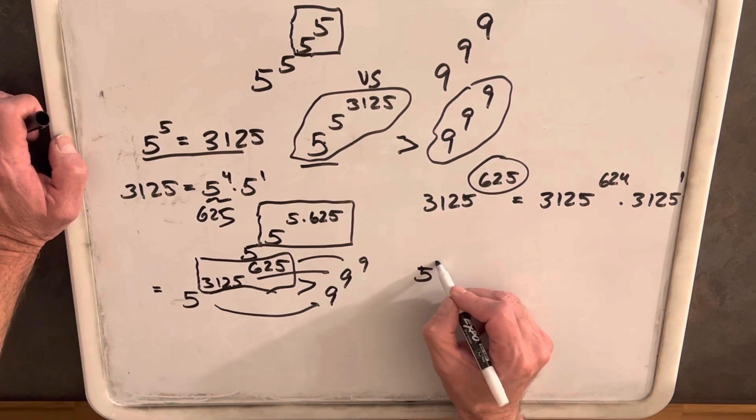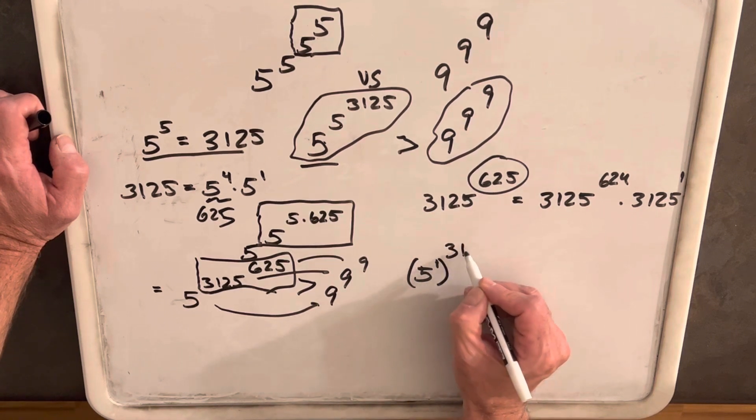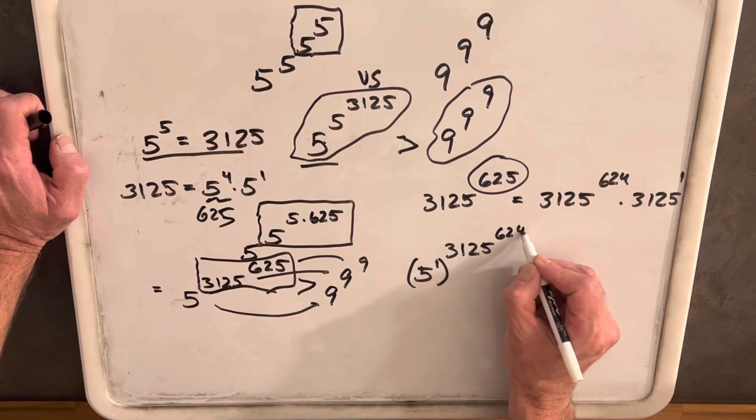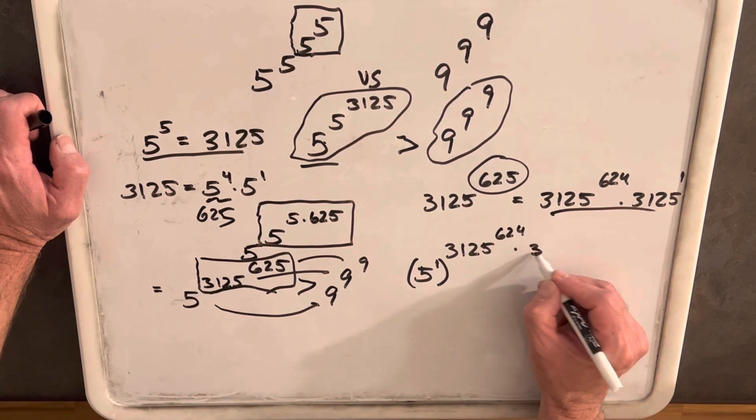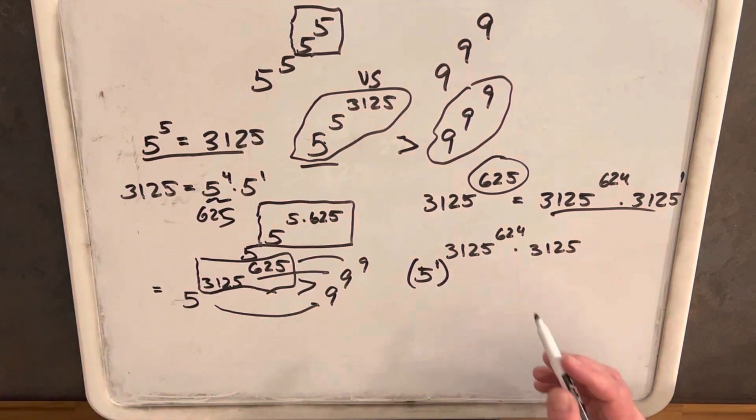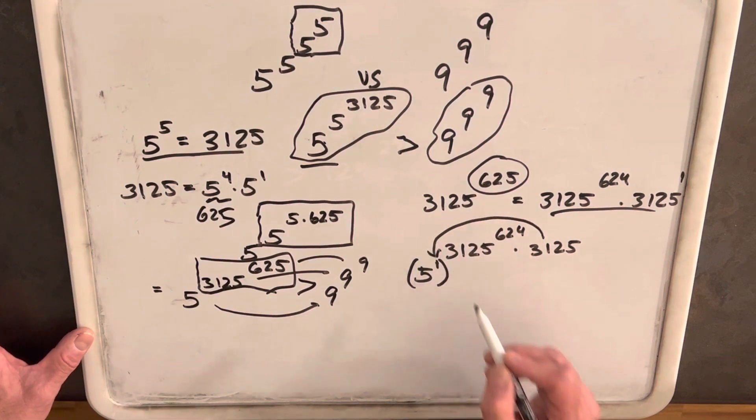And I'm going to write this with the 1 again as our base: 3,125 to the 624 using this times 3,125. I should have written it the other way, but what I want to do is I want to multiply this in here.